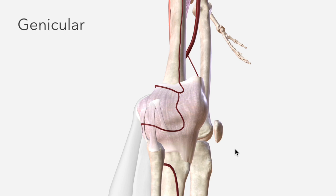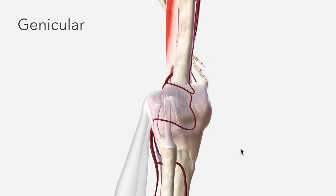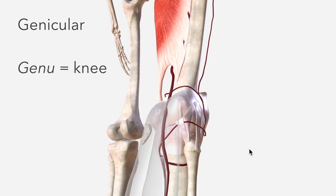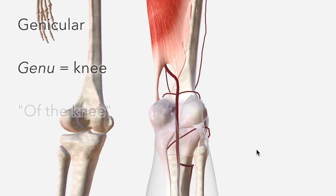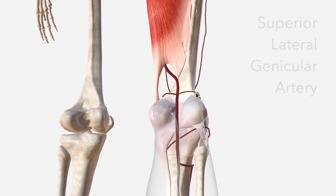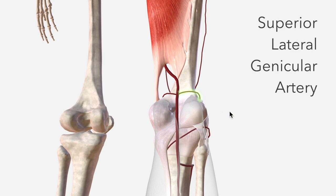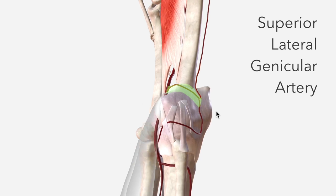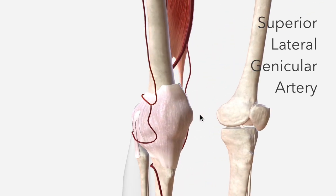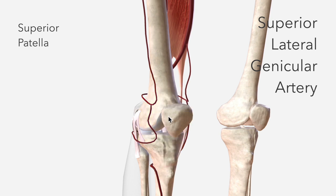Let's talk about the word genicula. It's derived from the Latin genu, which means knee — so genicula just means 'of the knee.' So when I say superior lateral genicular artery, essentially what I'm saying is the superior lateral artery of the knee. That is the first branch we'll cover: the superior lateral genicular artery, which courses around the femoral epicondyle here to supply the superior patella, which is this bone here.